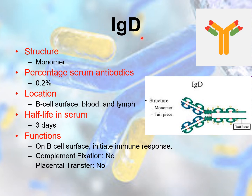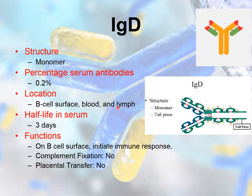IgD antibodies have a delta heavy chain and are usually present in the form of a monomer, contributing very little to total serum antibodies — about 0.2 percent. In monomer form, they have a light chain and a heavy chain, where the heavy chain is composed of one variable region and three constant regions. These IgD antibodies are present on the surface of B cells, in the blood and lymph.